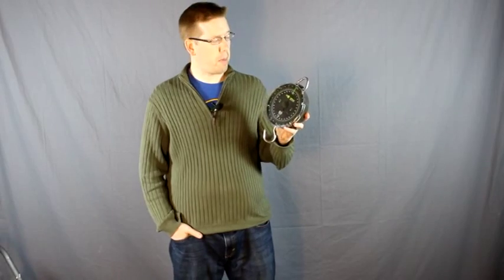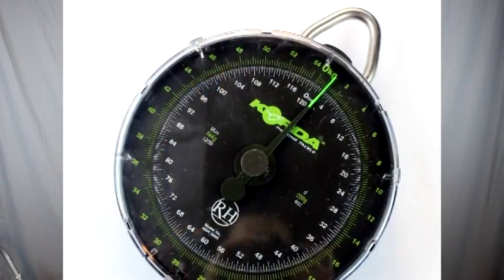But let me tell you a little bit about this. This is the Corda scale, it goes up to 120 pounds. So this is the bigger of the two models.